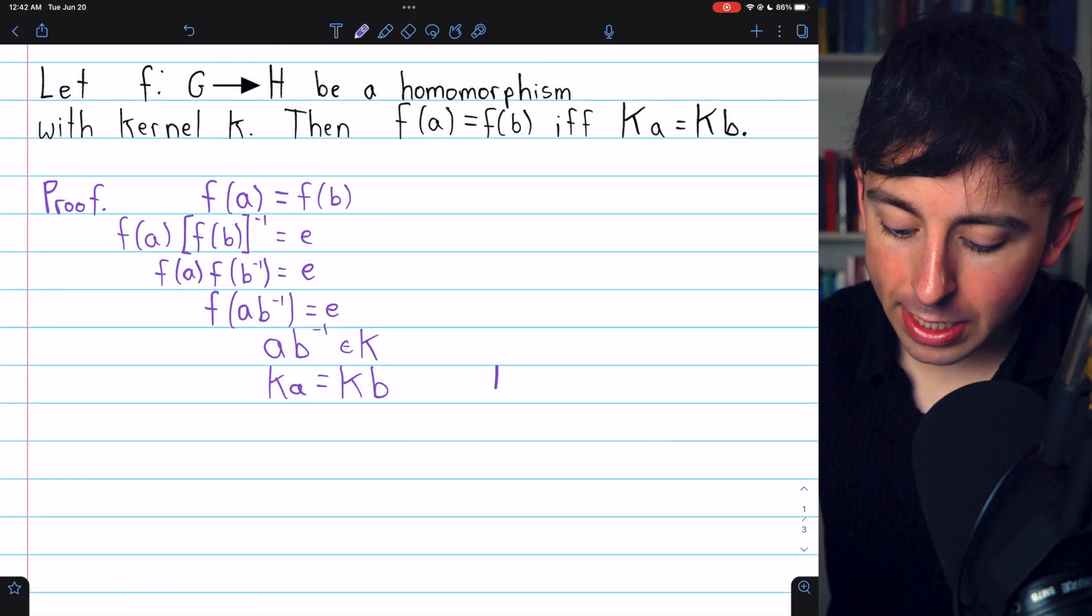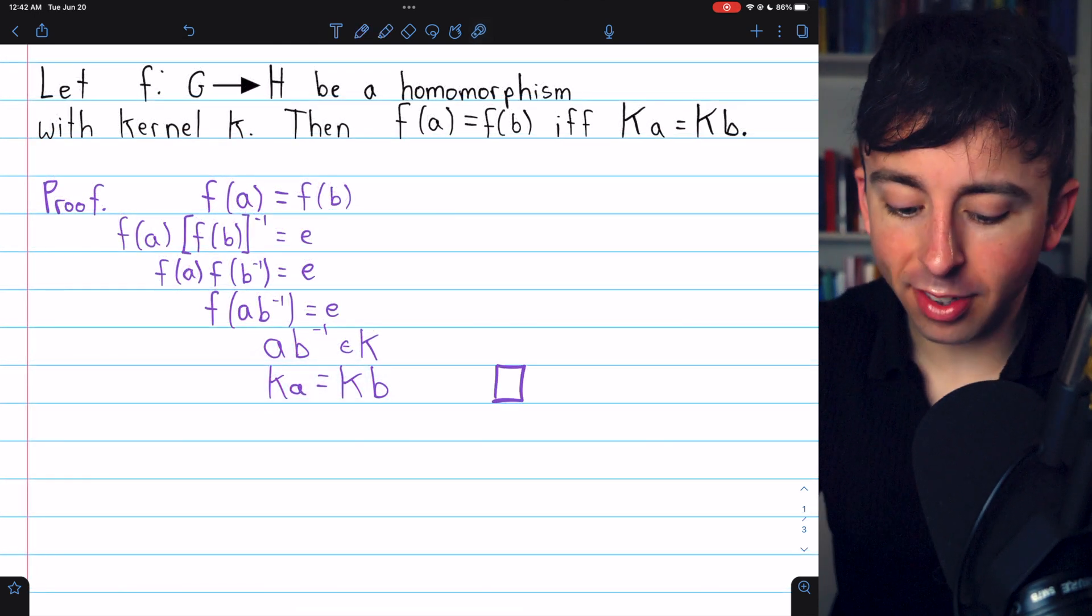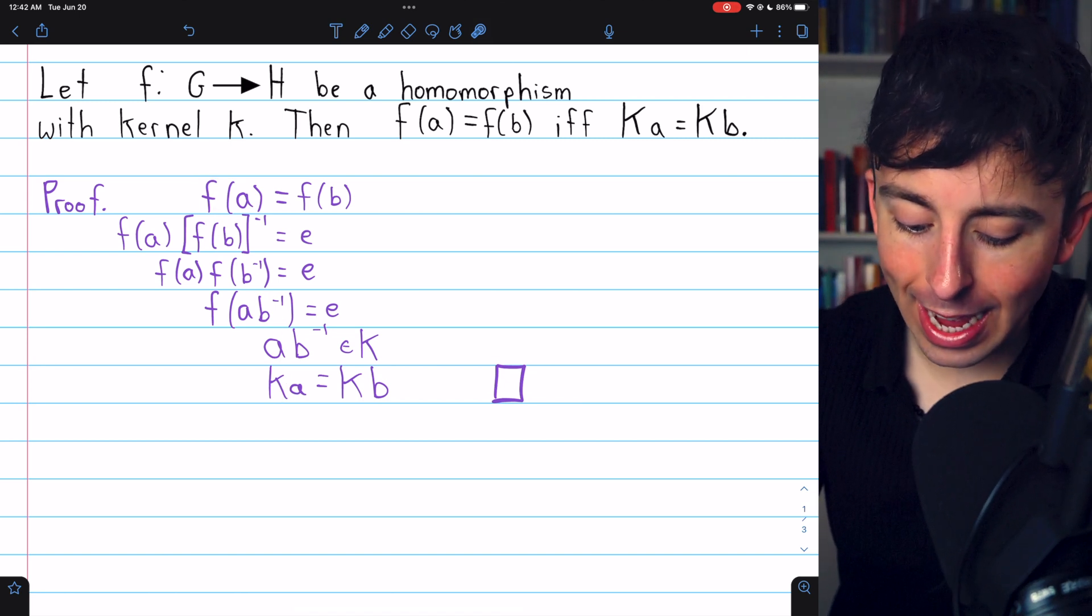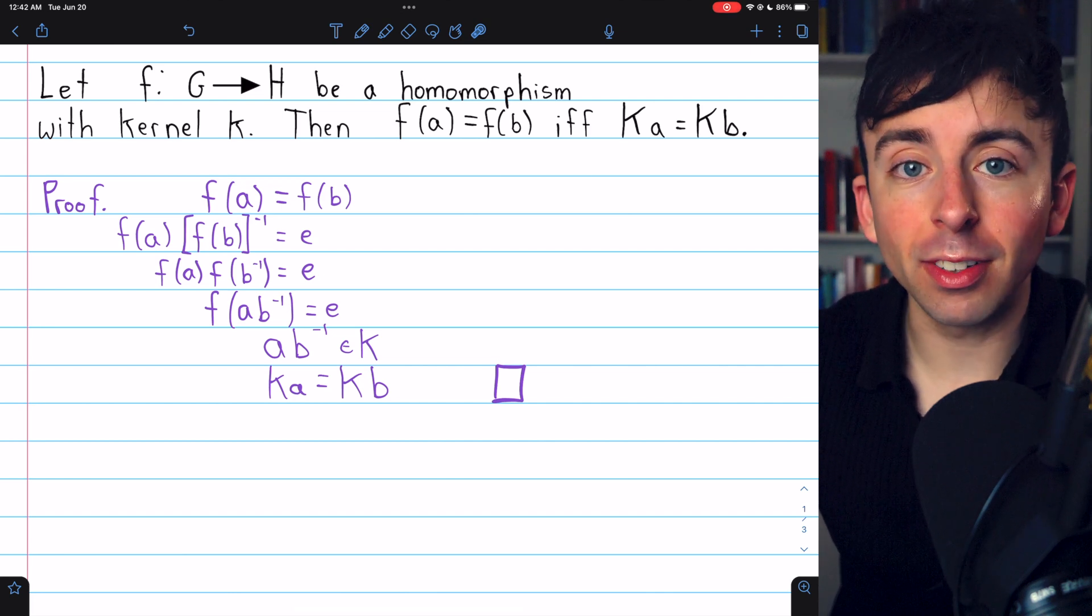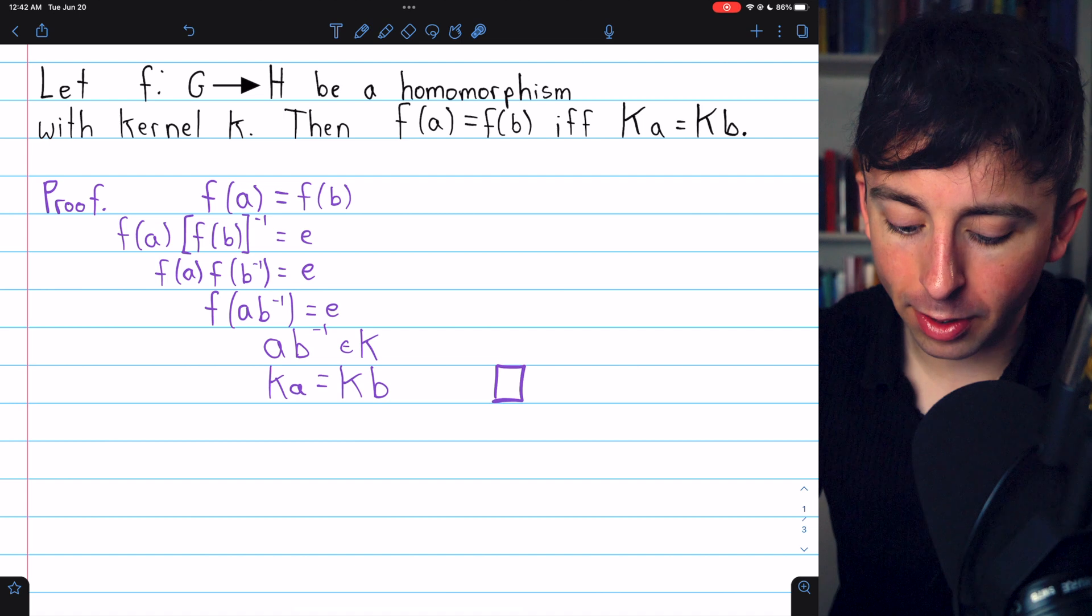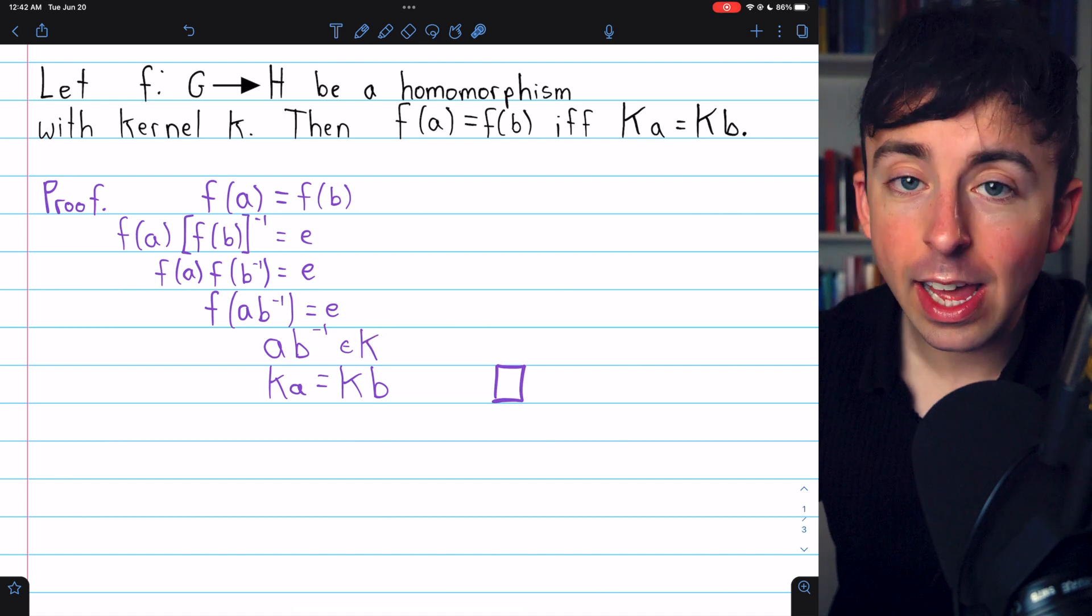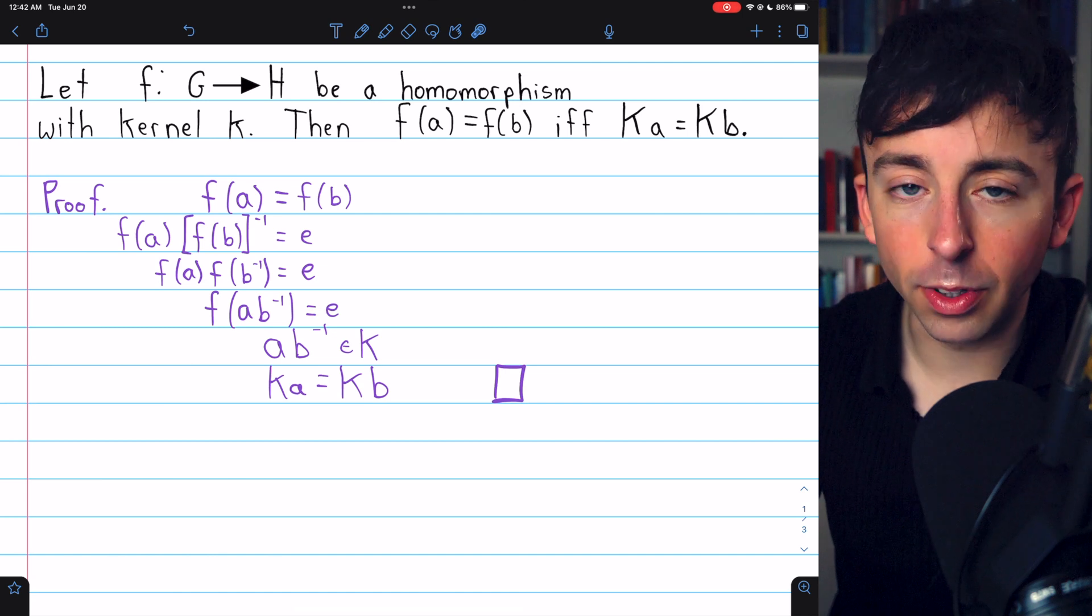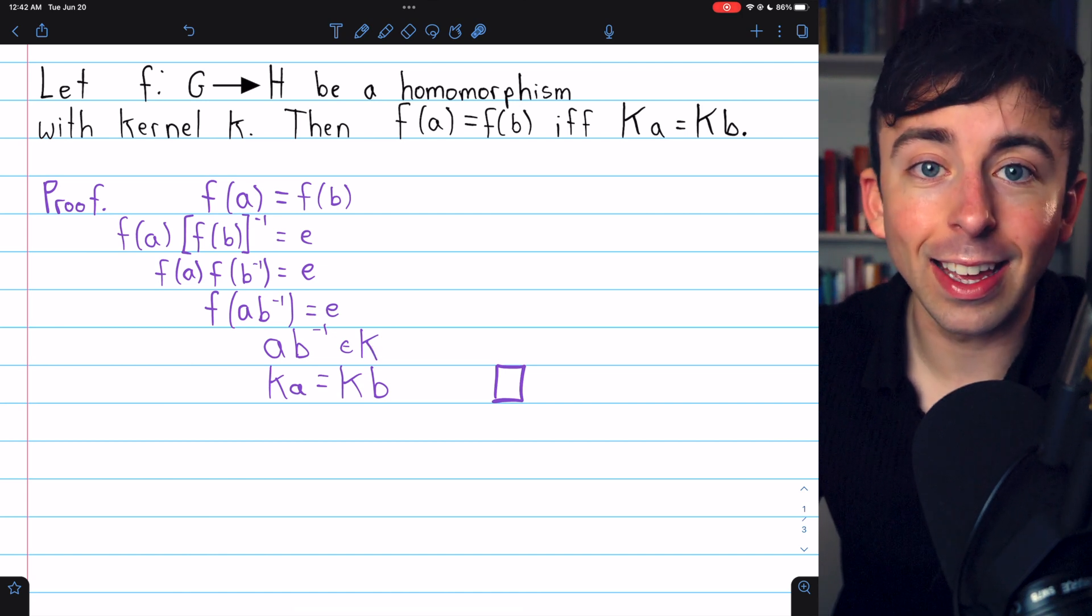And this actually completes the proof because all the steps we made here are reversible. If we had assumed that Ka equals Kb, like I said, we previously proved that's the case if and only if ab inverse is an element of K, which would then mean by definition that F(ab inverse) equals the identity since K is the kernel.